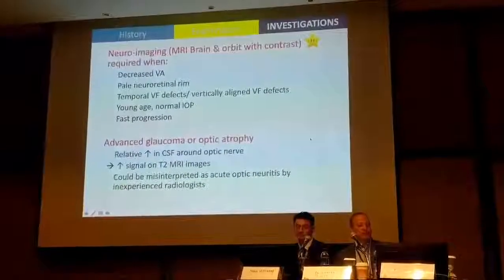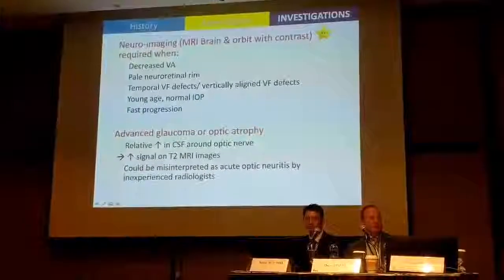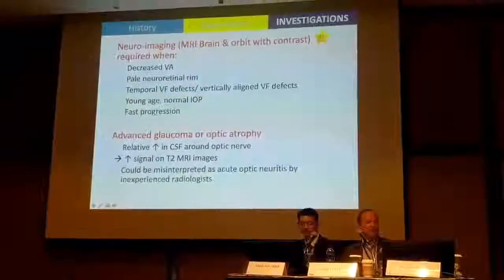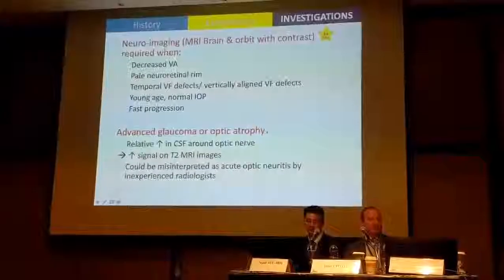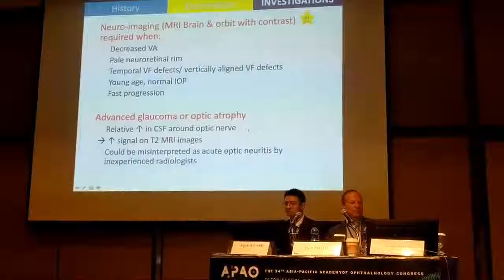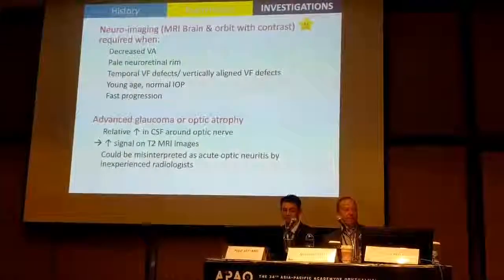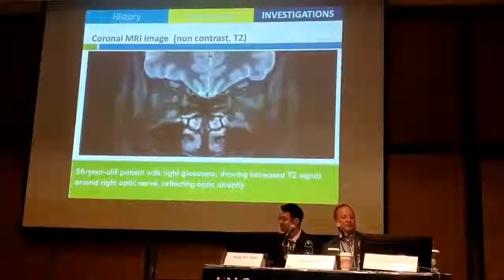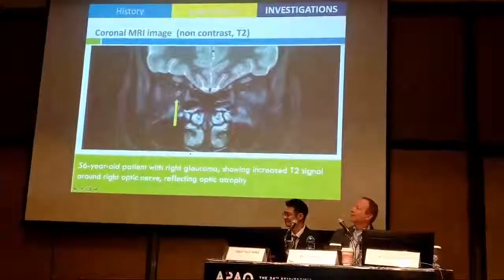Regarding neuroimaging, we should perform it when the patient has decreased central VA, pale neuroretinal rim, temporal visual field defects, visual field defects respecting the vertical meridian, young age with normal IOP, or faster progression than expected. Be aware that in advanced glaucoma or optic atrophy there is a relative increase in CSF around the optic nerve, giving increased signal on T2 MRI — sometimes radiologists report this as acute optic neuritis. For example, a 56-year-old patient with advanced glaucomatous optic neuropathy showed increased T2 signal reflecting optic atrophy, but was referred for investigation of optic neuritis because of the MRI findings.